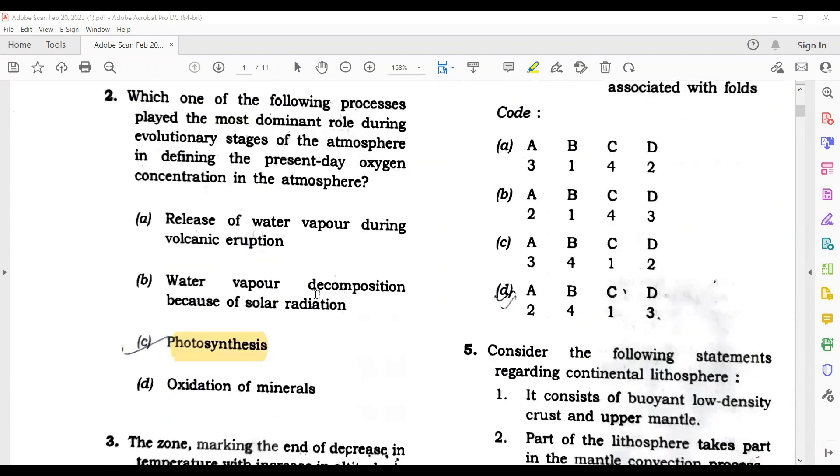Let's move to question number second. Which one of the following processes played the most dominant role during evolutionary stages of the atmosphere in defining the present-day oxygen constitution of the atmosphere? Again guys, this is not a direct question. Its answer is debatable.